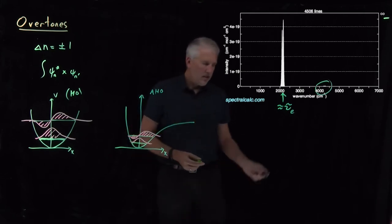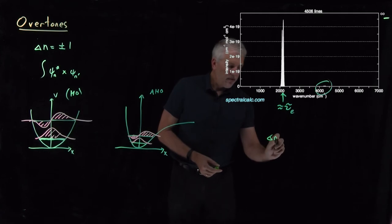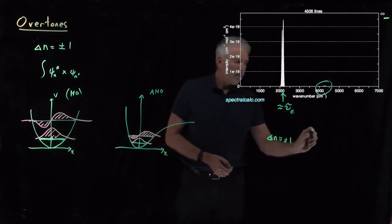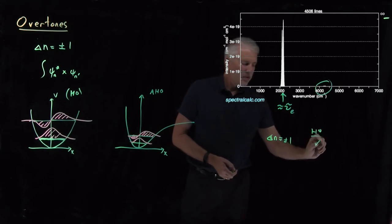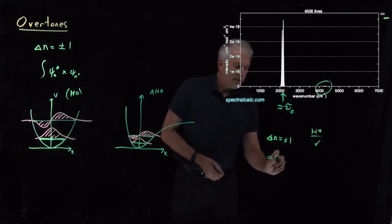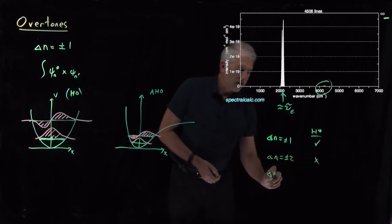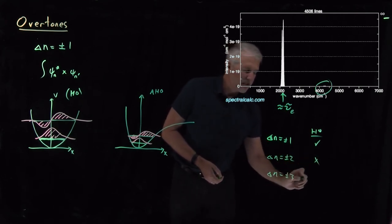So the result of that is, let's say we have our normal selection rule, delta n is plus or minus 1. For the harmonic oscillator, that was allowed. If delta n is plus or minus 2 harmonic oscillator, that was disallowed. Delta n plus or minus 3, that's disallowed or forbidden.